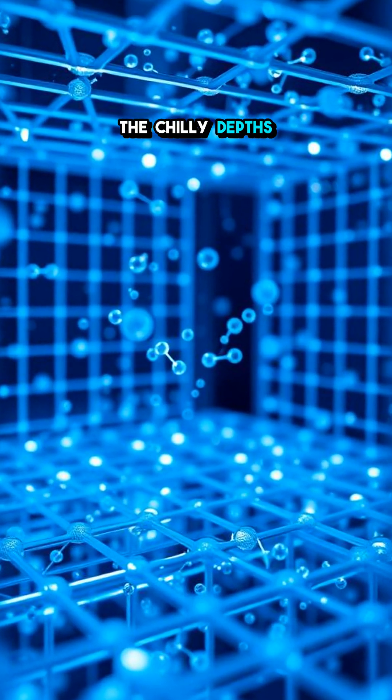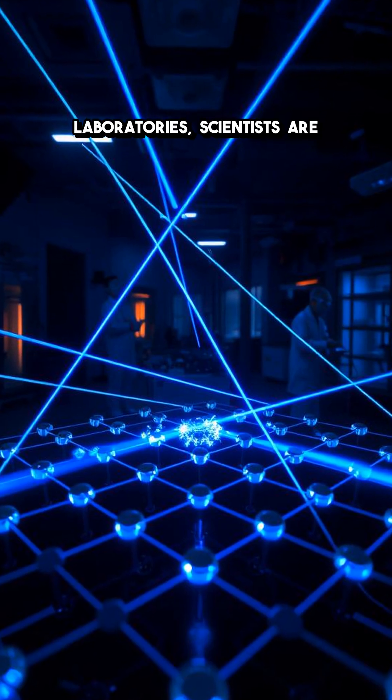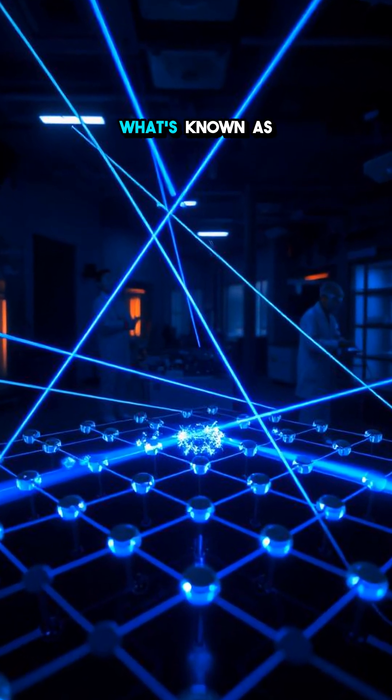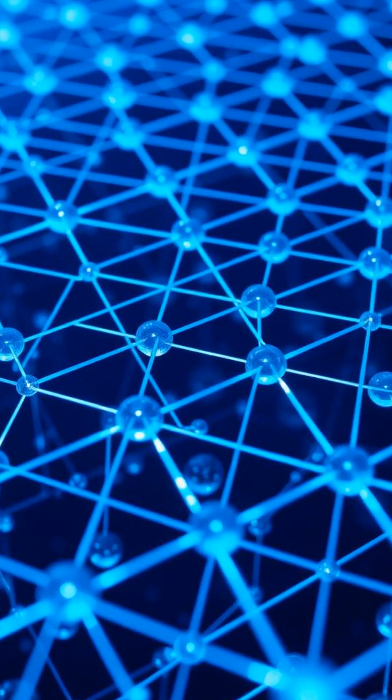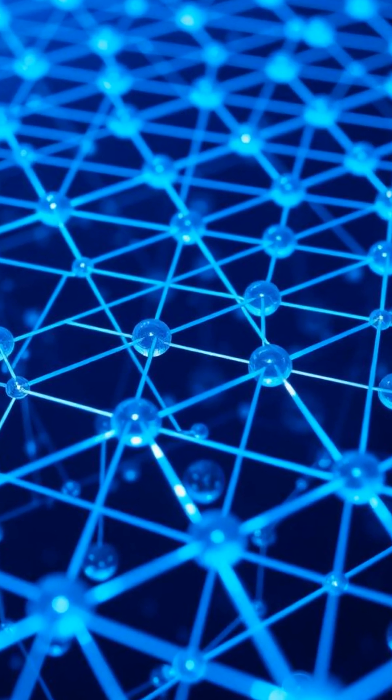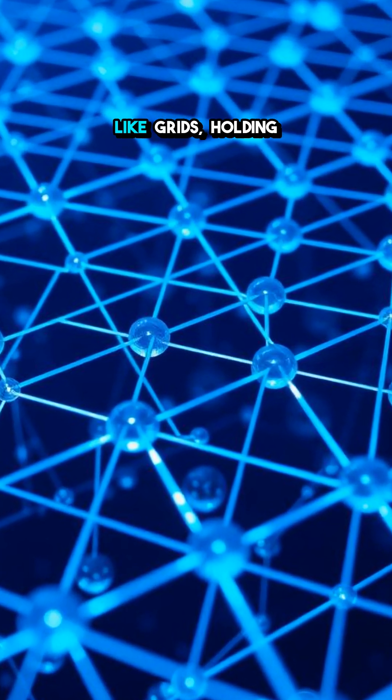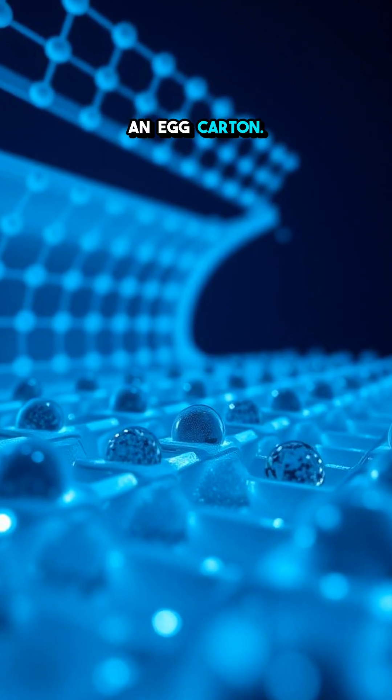Picture this in the chilly depths of ultra-cold laboratories. Scientists are using lasers to trap atoms, creating what's known as an optical lattice. This isn't just a fancy light show. These lattices act like grids, holding atoms in place like marbles in an egg carton.